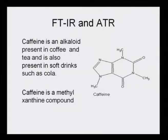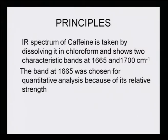Caffeine is an alkaloid. Its structure is present in coffee, tea, and soft drinks such as cola. This caffeine molecule has some structural details: it has carbonyl groups, carbon-carbon double bonds, and carbon-nitrogen double bonds. Caffeine is a methylxanthine compound — the xanthine moiety has methyl groups on the nitrogen. The IR spectrum of caffeine is taken by dissolving it in chloroform and shows two characteristic bands: one at 1665 cm⁻¹ and the other at 1700 cm⁻¹.